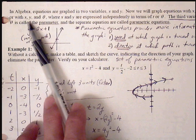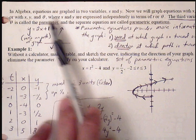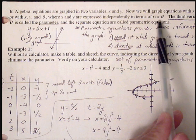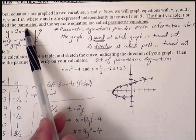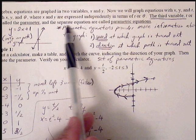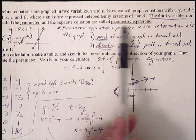Or with x, y, and theta, where x and y are expressed independently in terms of t or theta. The third variable t or theta is called the parameter and the separate equations are called parametric equations.